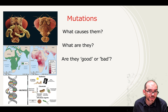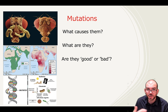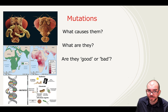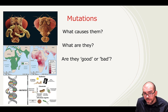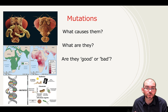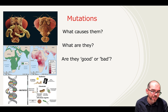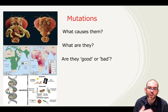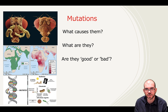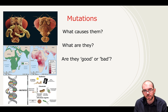So what causes a mutation? What are they? And are they good or bad? Hopefully now you're able to answer these questions, and if you're ever asked to determine the amino acid sequence, you'll be able to use a wheel or chart to do so. Thank you, and I hope this was helpful.